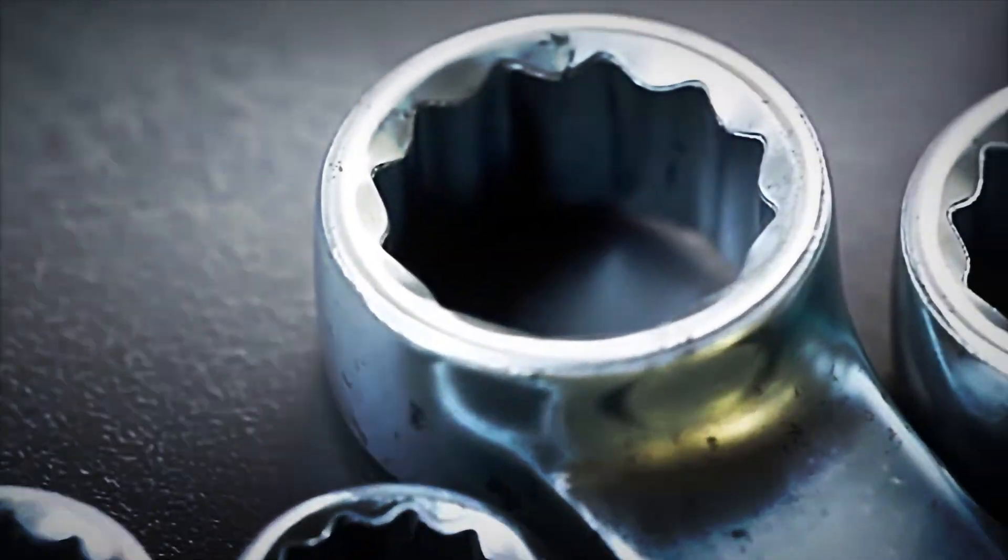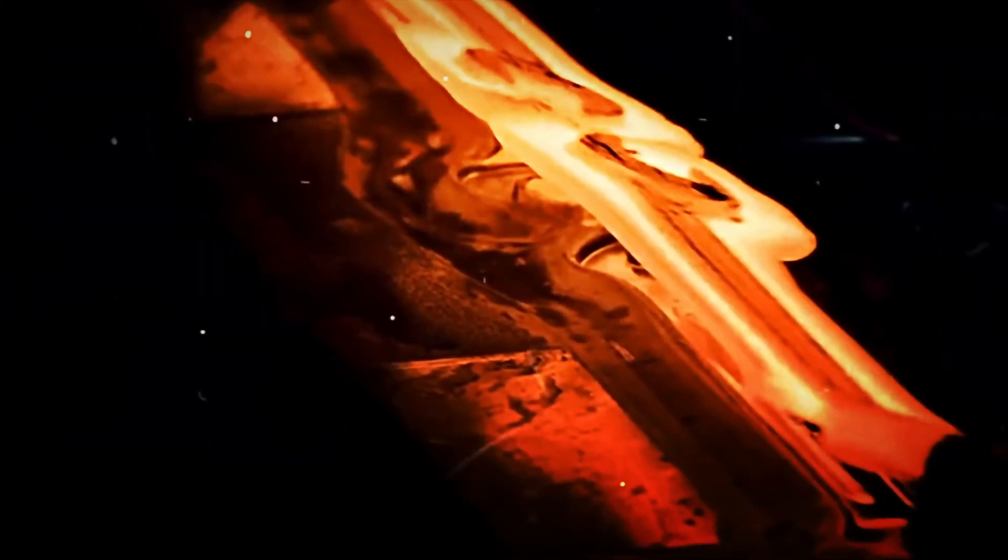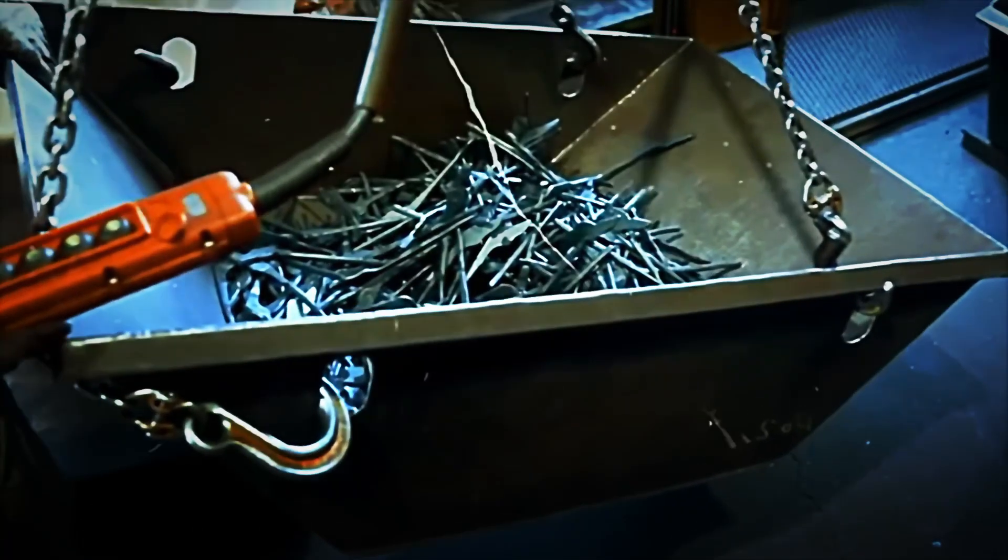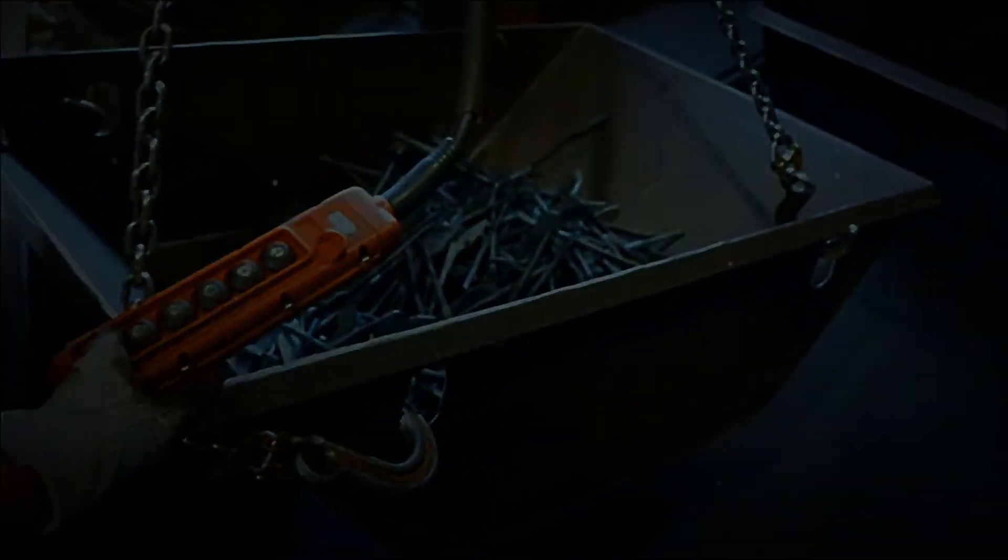Behind that tool you use to loosen or tighten a bolt lies a whole chain of thermal, mechanical, and metallurgical processes that convert metal bars into industrial precision instruments. Today we'll take you step by step inside the factory to discover how these wrenches are manufactured with the accuracy and durability demanded by the modern world.